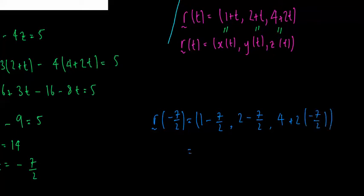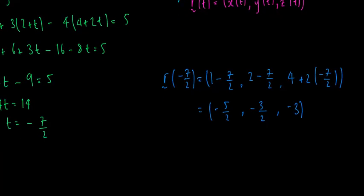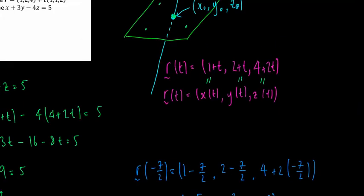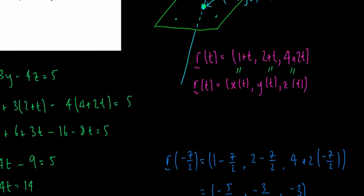1 minus 7 over 2 is negative 5 over 2. 2 minus 7 over 2 is negative 3 over 2. And 2 and 2 cancel here, and I'm left with 4 minus 7, so negative 3. And that is the point X naught, Y naught, Z naught of intersection.